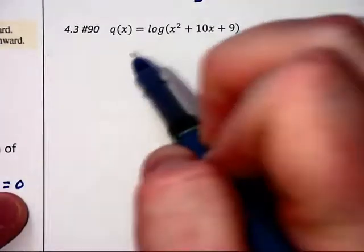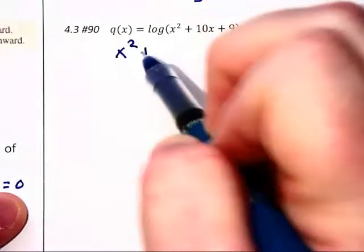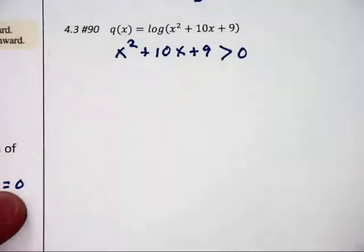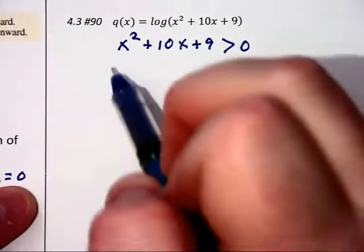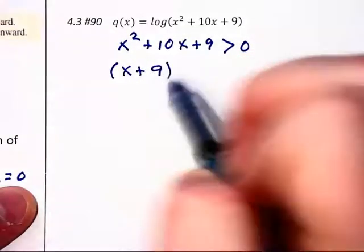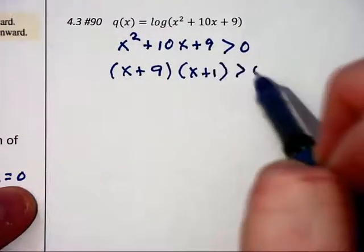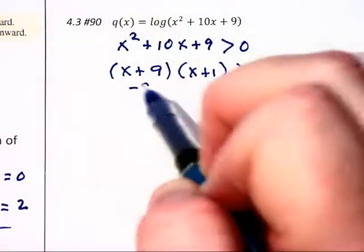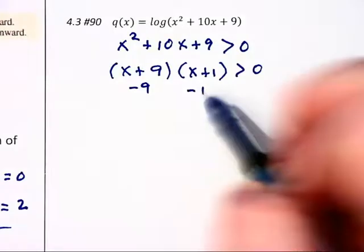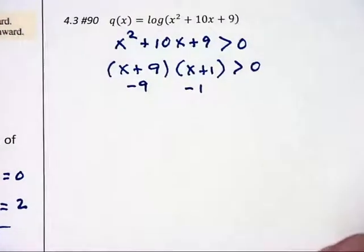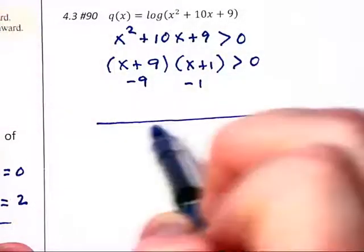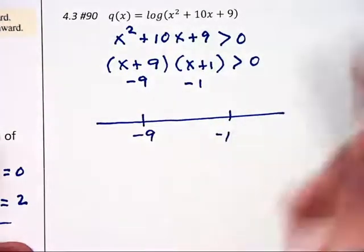But let's look at this next one. In this next one, we need to make sure that x squared plus 10x plus 9 is greater than 0. And this is going to factor into x plus 9 times x plus 1 greater than 0. And if this was an equation, the two solutions would be negative 9 and negative 1. But this is not an equation.